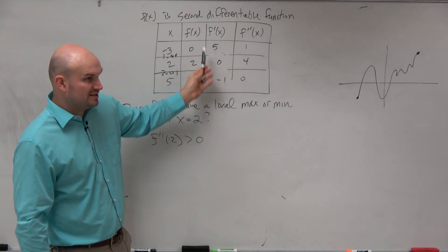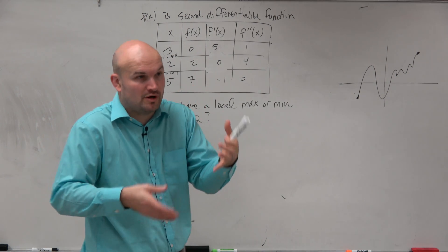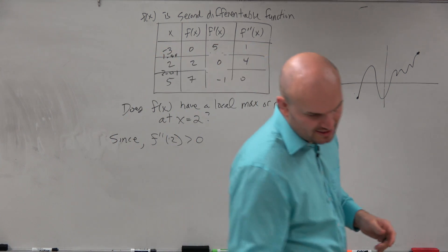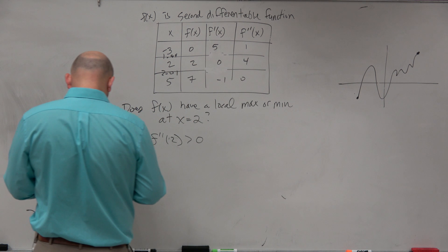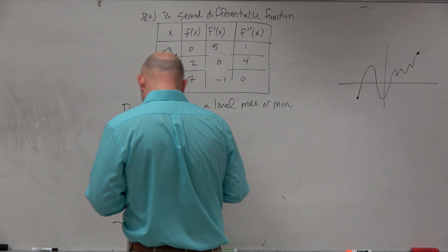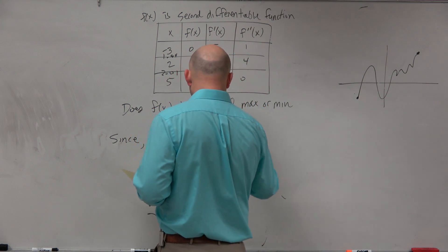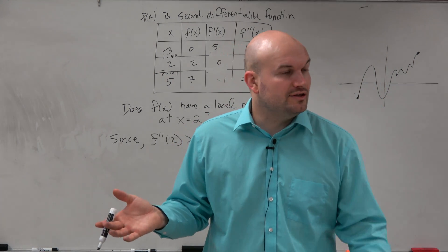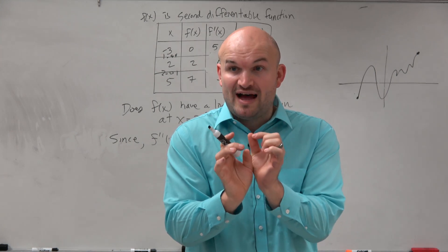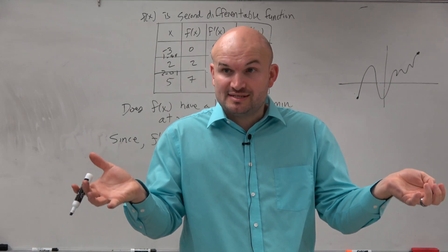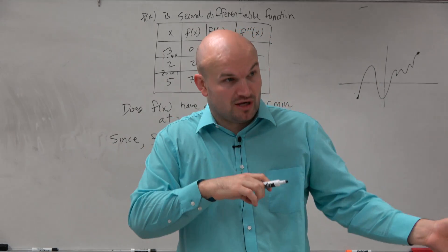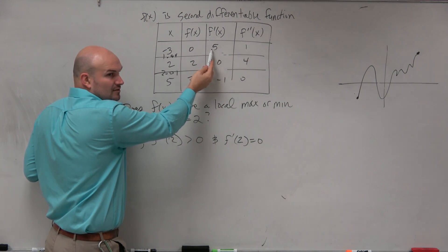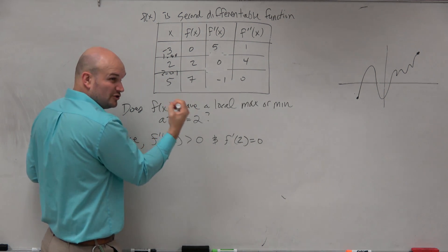The first derivative or second derivative work, but the problem with this is by this table, this is not a polynomial function where we could easily determine. So what we want to say is f prime of 2 is equal to 0, which means it is a critical point. Remember, the only time the second derivative value works is if that is a critical value of your first derivative. We found the critical values first, and then we used those test points to plug them into the second derivative. So that doesn't work for either of these two. We can't check the concavity at x equals negative 3, because that's not a critical value — the first derivative is not equal to 0. We can't check the concavity at 5 either. That's not a critical value. It has to be the critical values of the first derivative.